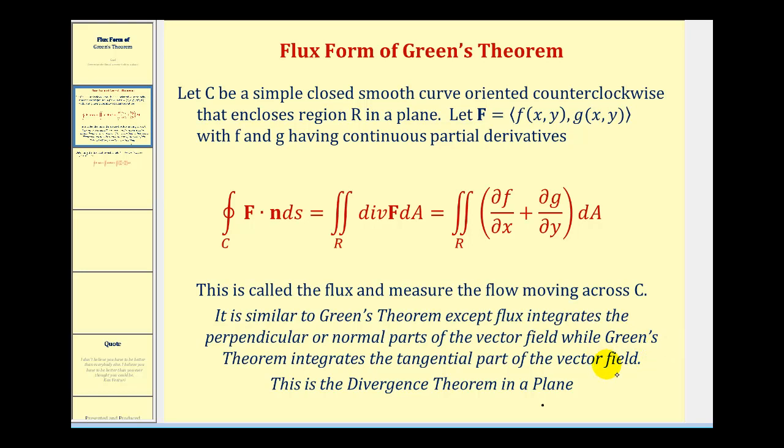So you can think of Green's Theorem measuring the rotation or twisting of the vector field across C, and the flux measures the flow inward or outward across C. Let's go ahead and take a look at an example, and we'll also look at it graphically.